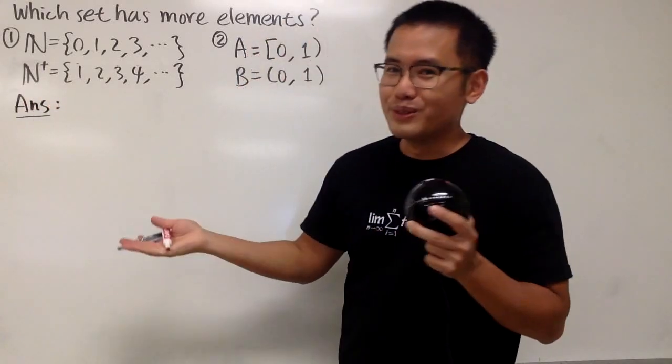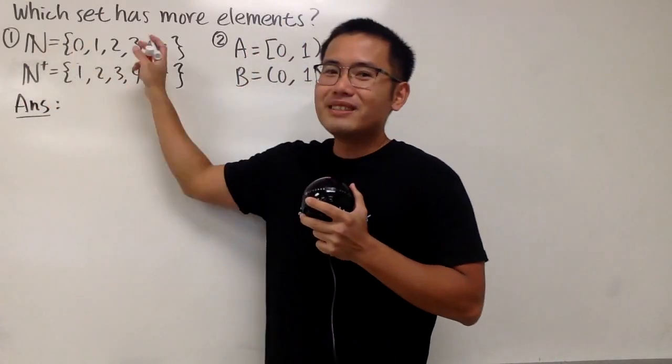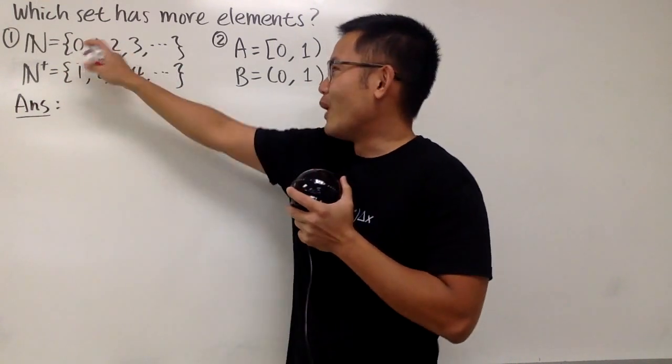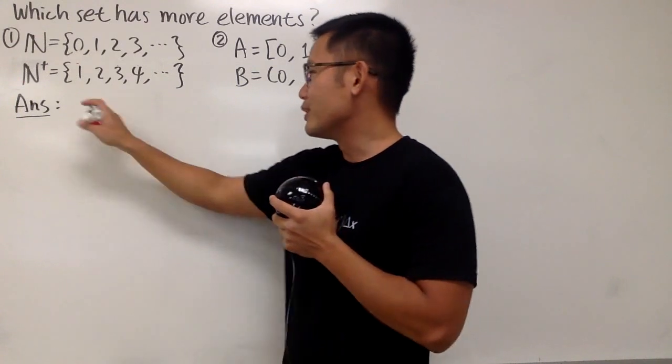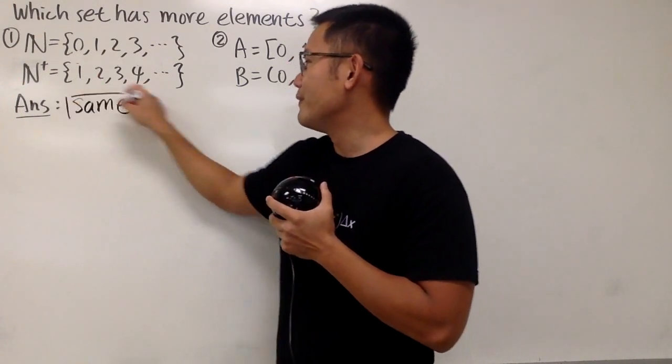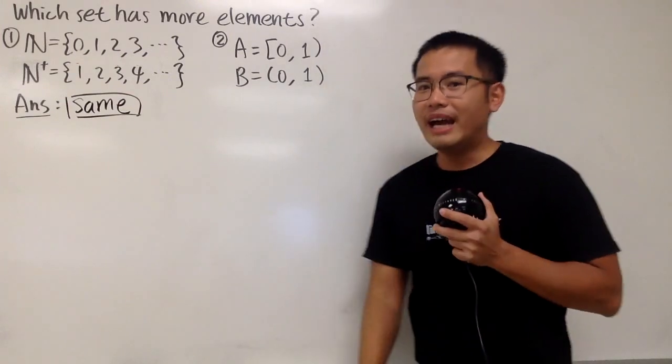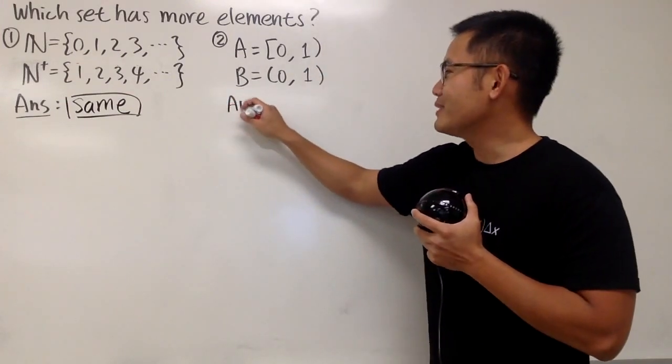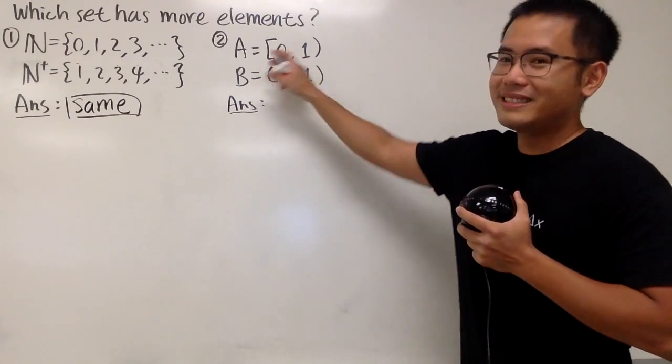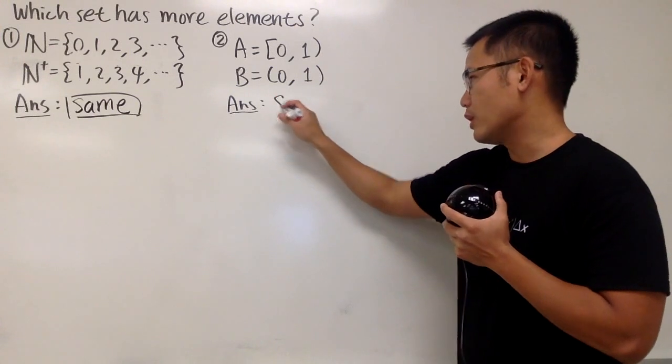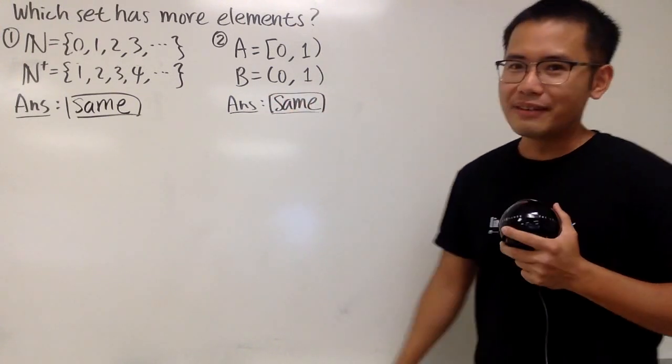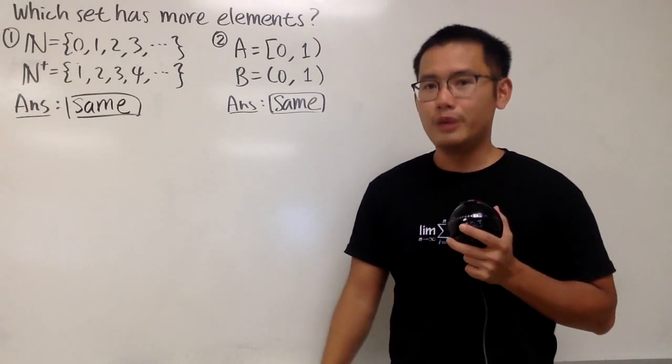For the first one, it seems like because the first set has a zero and the second set doesn't, so the first set should be the one that has more elements, right? But no, the answer to this right here is they have the same number of elements. And for the second one, although this set contains zero and this set does not, they also have the same number of elements. We just have to deal with infinite sets really carefully.